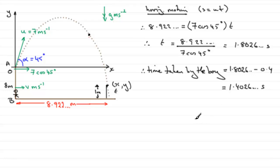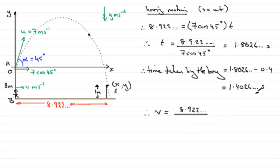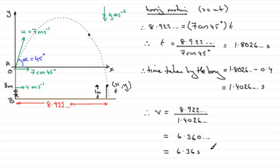On the final stage, we want to find the value of V. So V equals distance divided by time. The distance was 8.922 metres, divided by the time of 1.4026 seconds. That comes to 6.360, so rounding to 3 significant figures, V equals 6.36 metres per second.